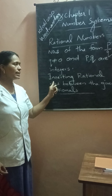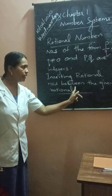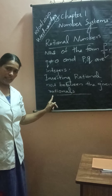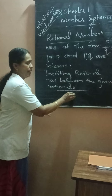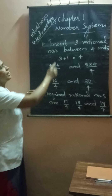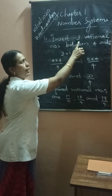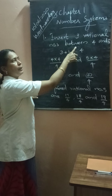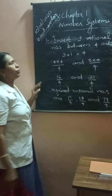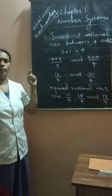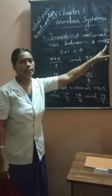Then we move to our important next topic: inserting rational numbers between the given rationals. Our first question is: insert 3 rational numbers between 4 and 5. So here we need 3 rational numbers in between 4 and 5, where 4 and 5 are the given numbers.